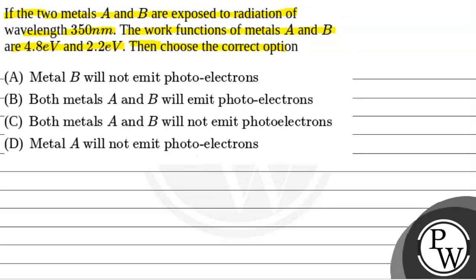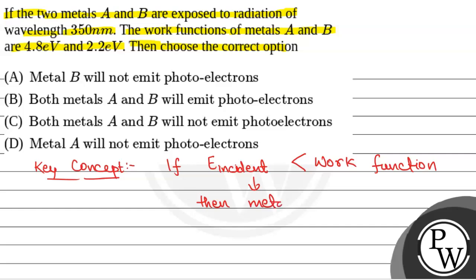So, we will solve this question. First of all, we will see what will be the key concept to solve this question. The key concept that will be used to solve this question is if energy of incident radiation is less than work function of metal, then electrons will not be emitted. Then metal will not emit photoelectrons.